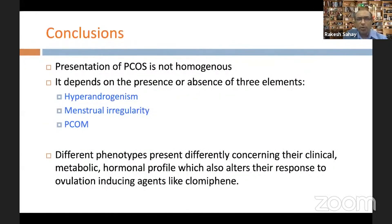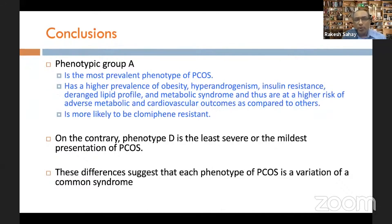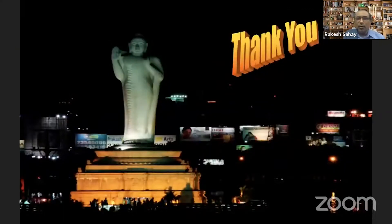In conclusion, the presentation of PCOS is not homogeneous — it depends on the presence or absence of hyperandrogenism, oligo-anovulation, and PCO morphology. Different phenotypes present differently in terms of their clinical, metabolic, and hormonal profiles, which alters their response to ovulation-inducing agents like clomiphene. Phenotype A, the most prevalent, has the highest degree of hyperandrogenism, obesity, and cardiovascular risk, while phenotype D is the mildest presentation. These differences suggest that each phenotype of PCOS is a variation of a common syndrome. Thank you.